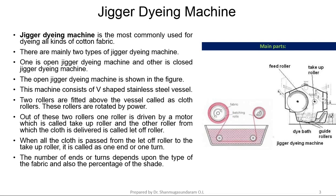This machine consists of a V-shaped stainless steel vessel. Two rollers are fitted above the vessel called Cloth Rollers, which are rotated by power. One roller is driven by a motor, called the Take-Up Roller, and the other roller from which the cloth is delivered is called the Let-Off Roller. When all the cloth is passed from the Let-Off Roller to the Take-Up Roller, it is called One End or One Turn.